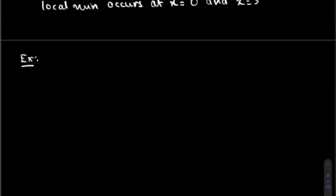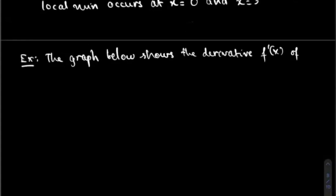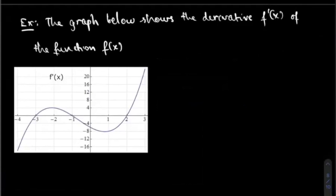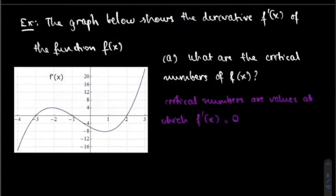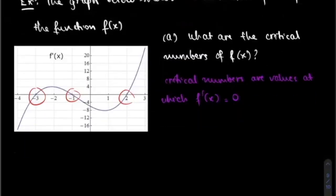Moving on to the next example: the graph below shows the derivative f prime of X of the function f. This is f prime of X — very similar to the previous problem. The first question is: what are the critical numbers of f? Critical numbers are the locations where f prime of X is equal to zero. So the x-values where f prime of X equals zero are X equal to negative three, X equal to negative one, and X equal to two — three critical numbers.